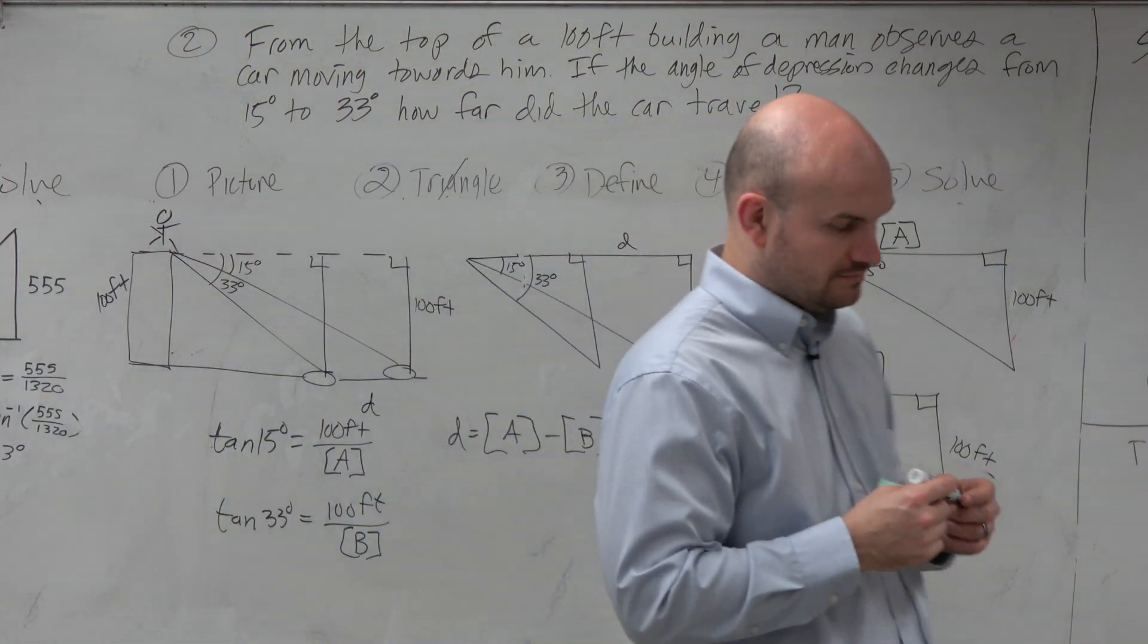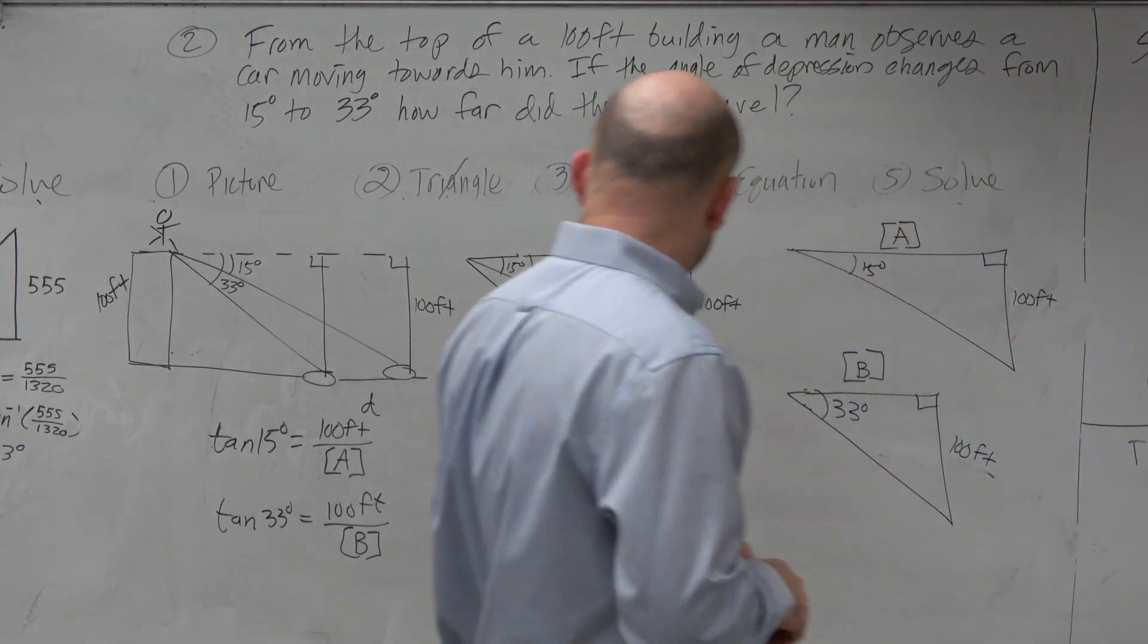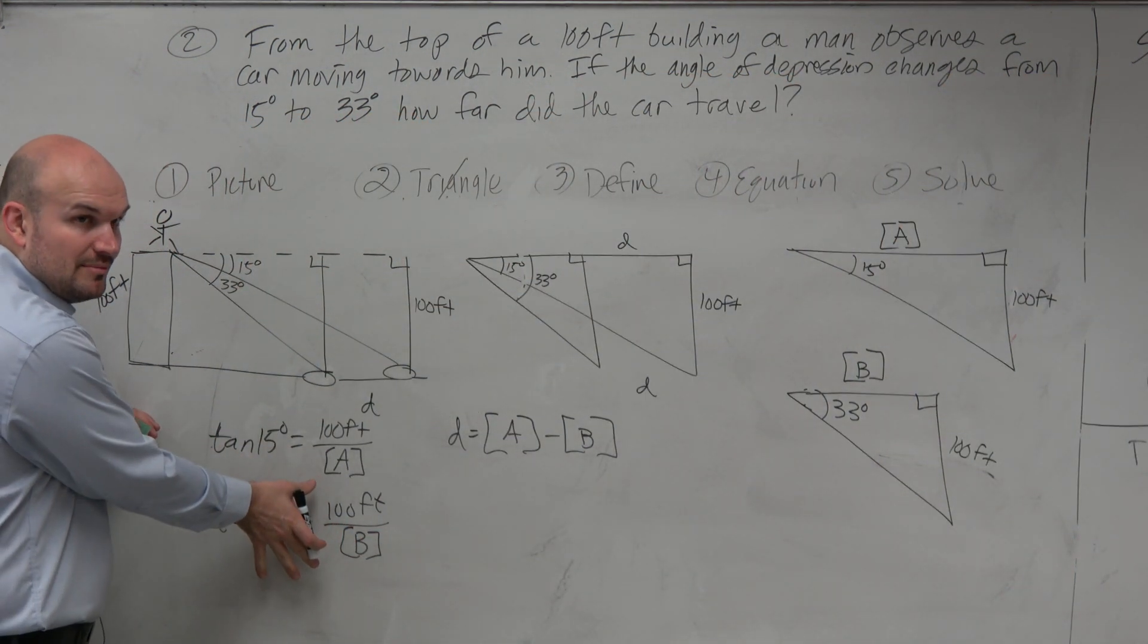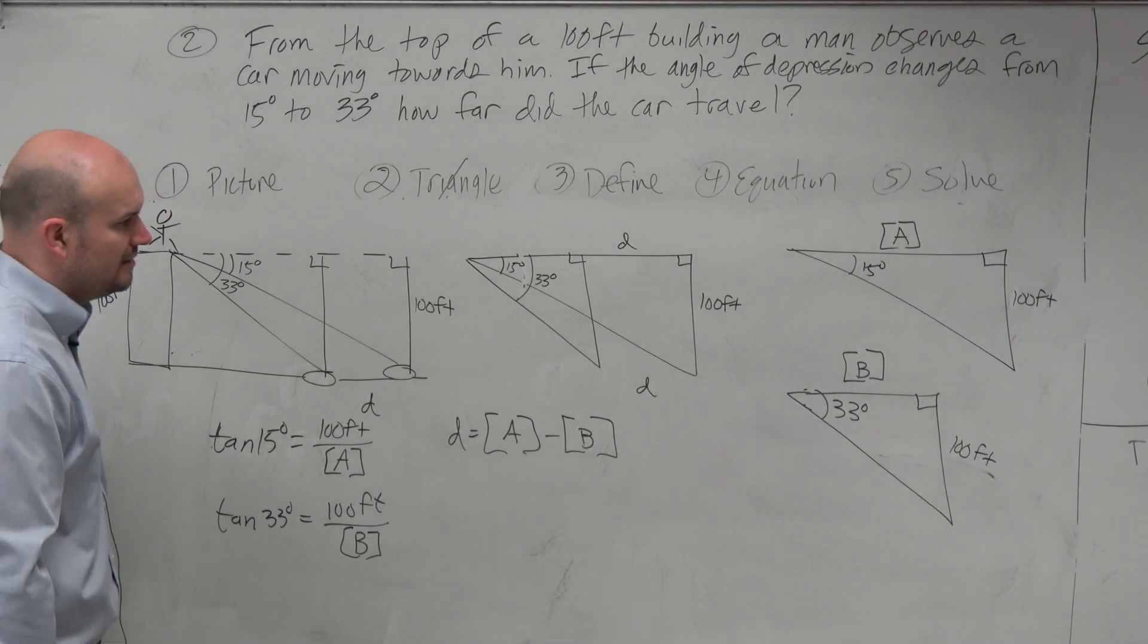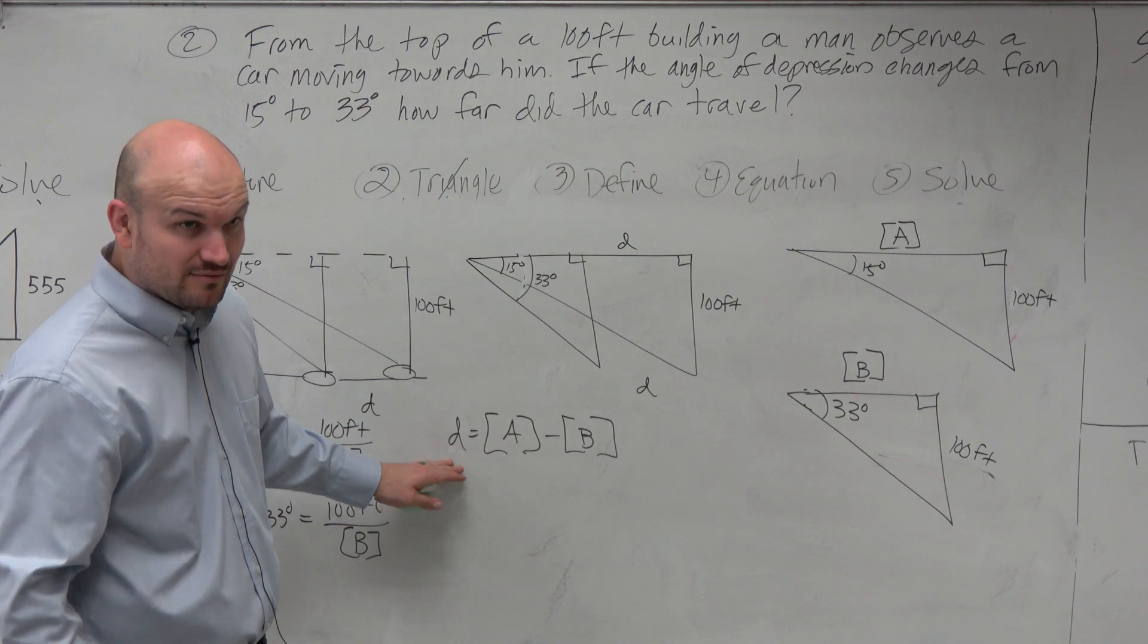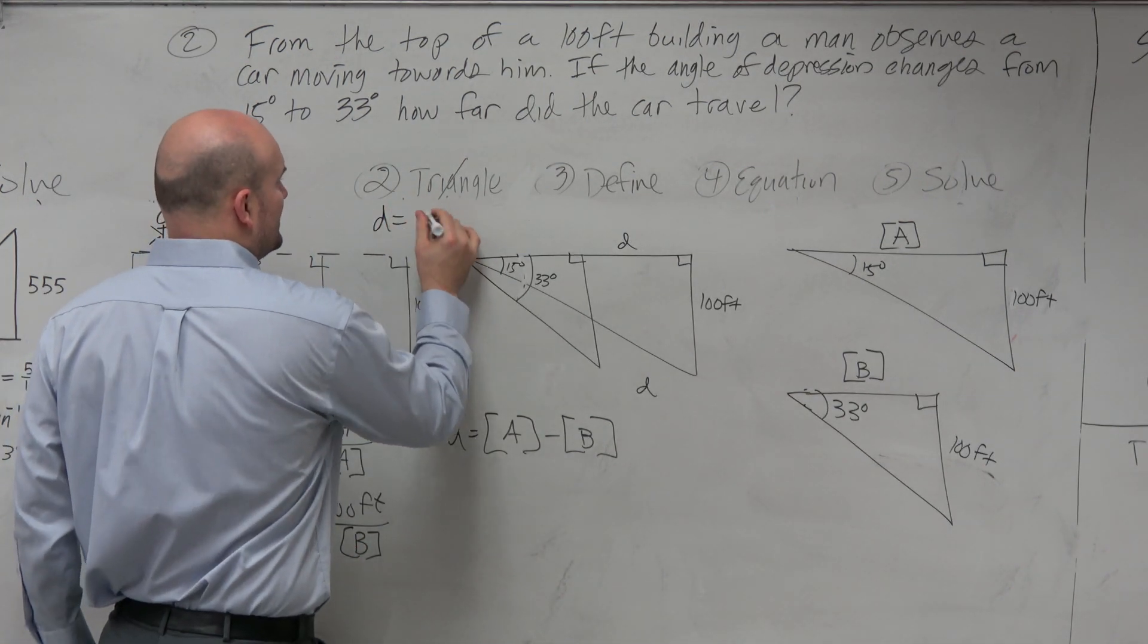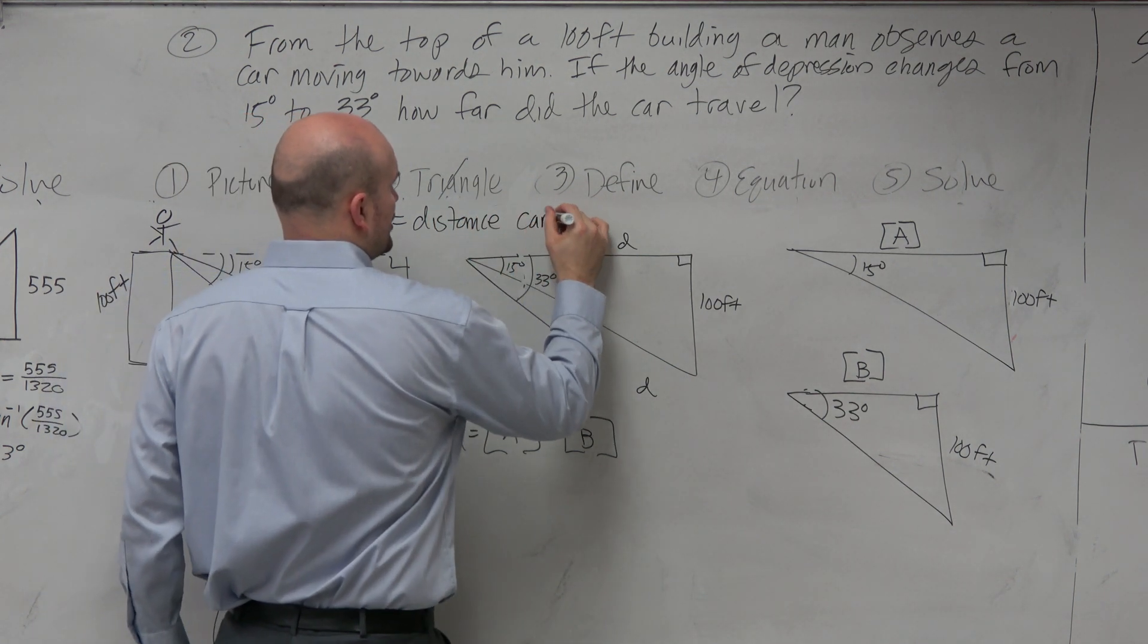Do we need to do what a and b is or not? No, as long as you are, like, I'm OK as long as you are defining, like, where they're coming from in the triangle, like, that's perfectly fine. Like, we are going to want to define d, which d represents. And d is going to be, we are going to want to define that. So d is equal to the distance the car traveled.